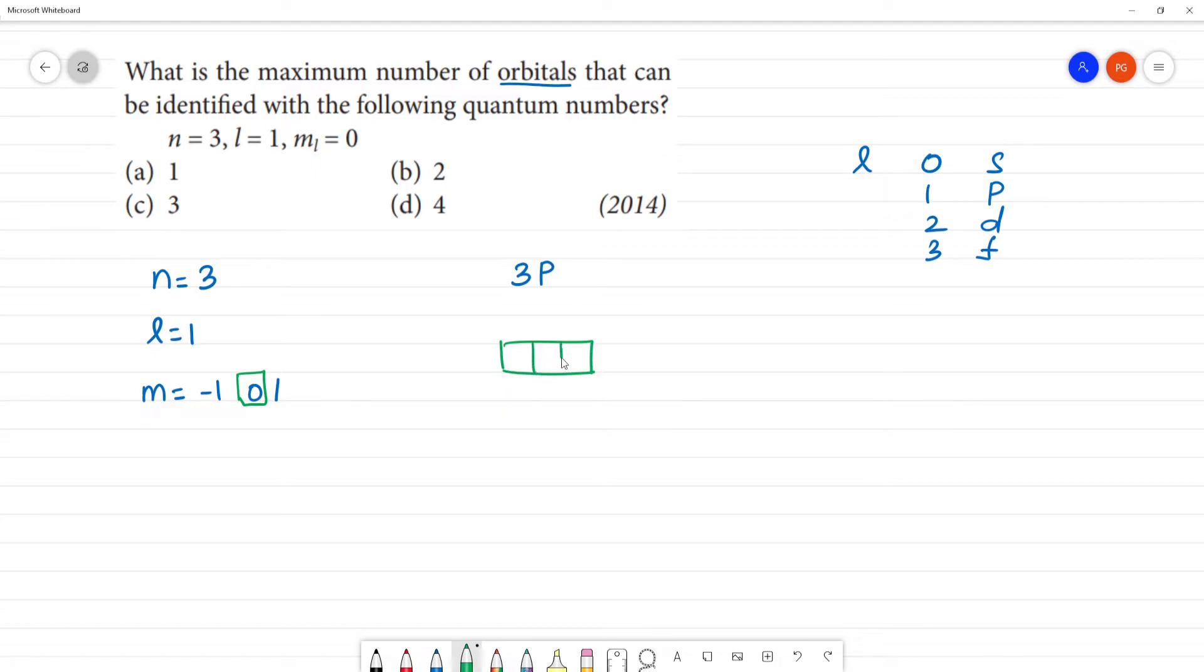So we have three orbitals. So any orbital can be 0. That may be px, px can be 0, py can be 0, or pz can be 0. All three can be 0, 0, 0. Right?